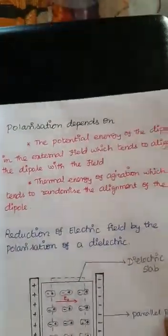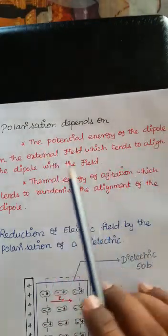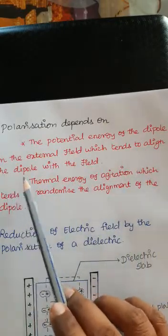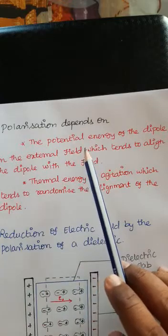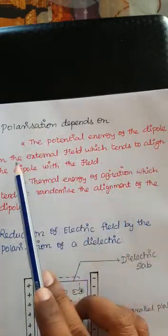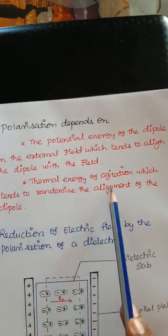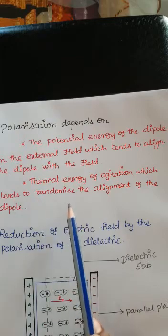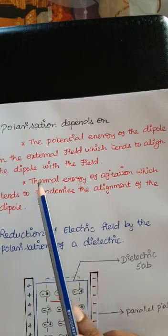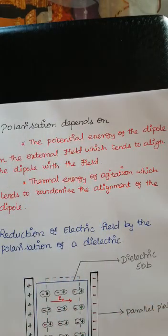This polarization mainly depends upon two factors. The first is the potential energy of the dipole in the external field, which tends to align the dipole with the field. The second is the thermal energy of agitation, which tends to randomize the alignment of the dipole. These two factors are important because polarization mainly depends upon them.